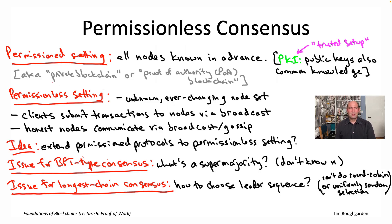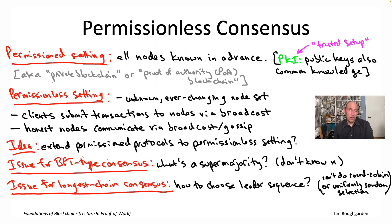BFT-type protocols — an immediate challenge: you're supposed to proceed by collecting super majorities of votes. If you have 100 nodes, you want 67 votes before proceeding to the next stage. But in the permissionless setting, you don't know what N is. You don't know how many nodes are running the protocol, which means you don't know how many votes to count before considering a block agreed upon. Without N, how do you do vote counting, which appears fundamental to BFT-type protocols?